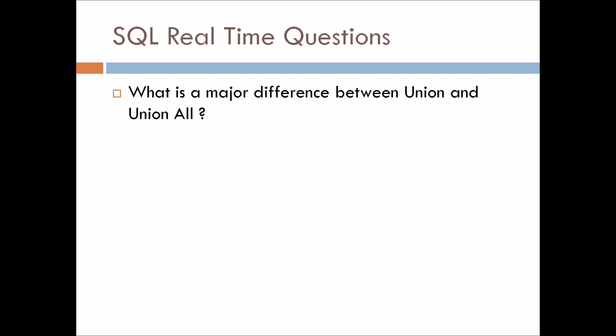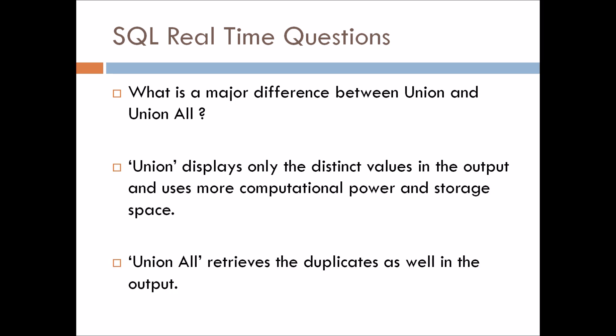What is the major difference between union and union all? Union displays only the distinct values in the output and uses more computational power and storage space. But union all retrieves duplicates also in the output and uses less computational power and storage space as compared to union.